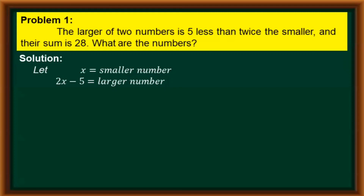So, let's now create our equation. According to the problem, the sum of the two numbers is 28. Hence, we just add x, which is the smaller number, and 2x minus 5, which is our larger number. And we have our equation: x plus (2x minus 5) equals 28.